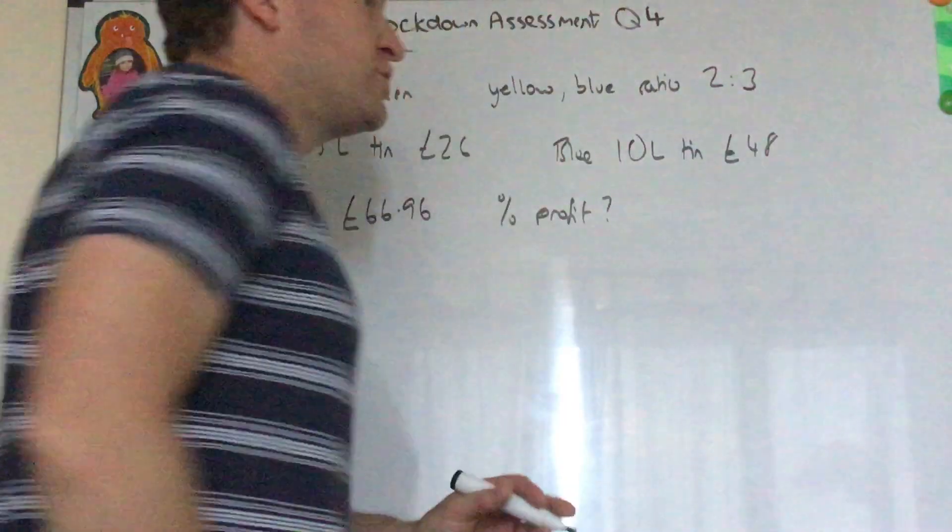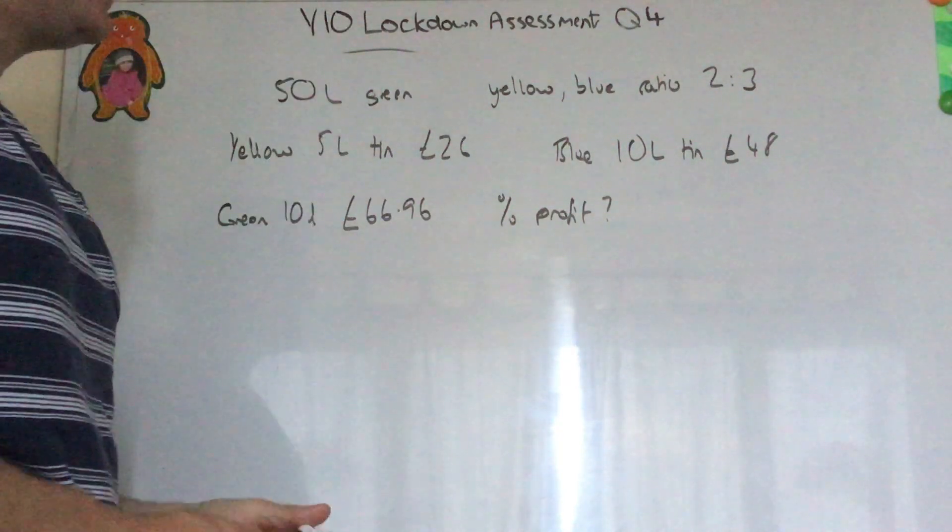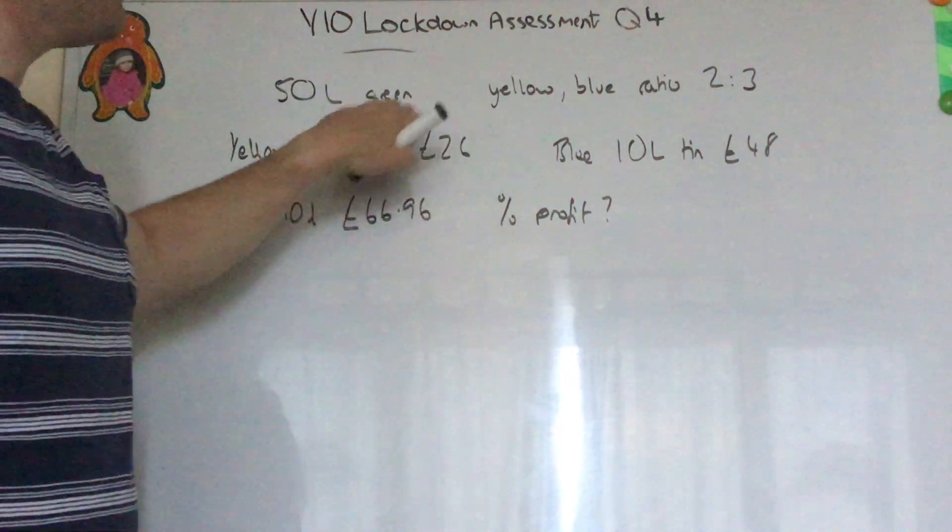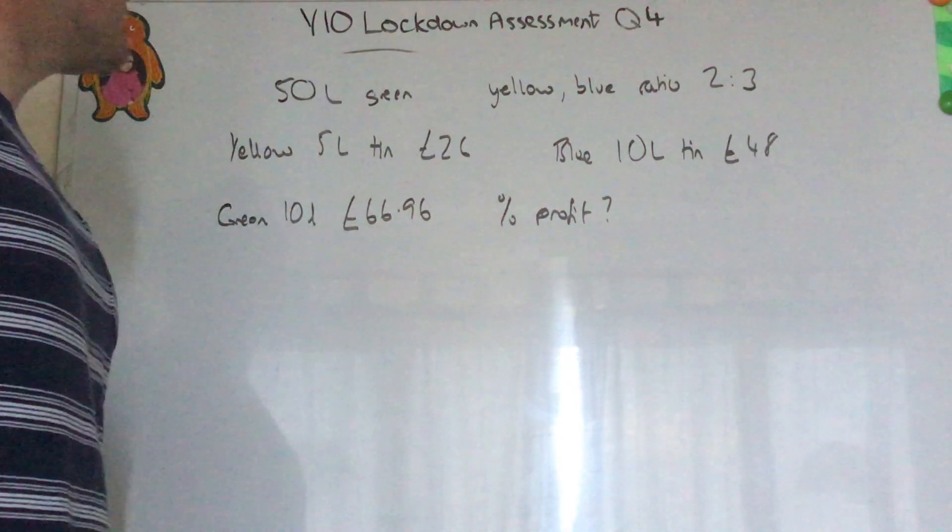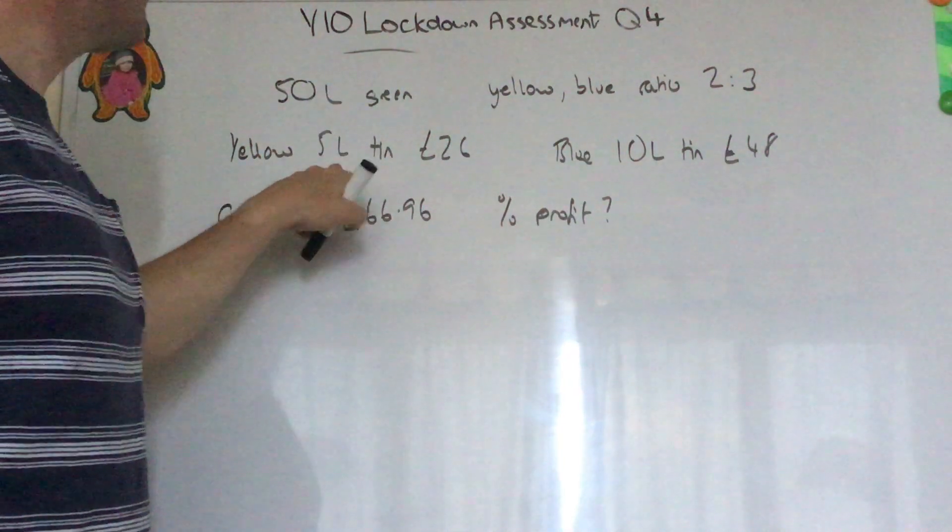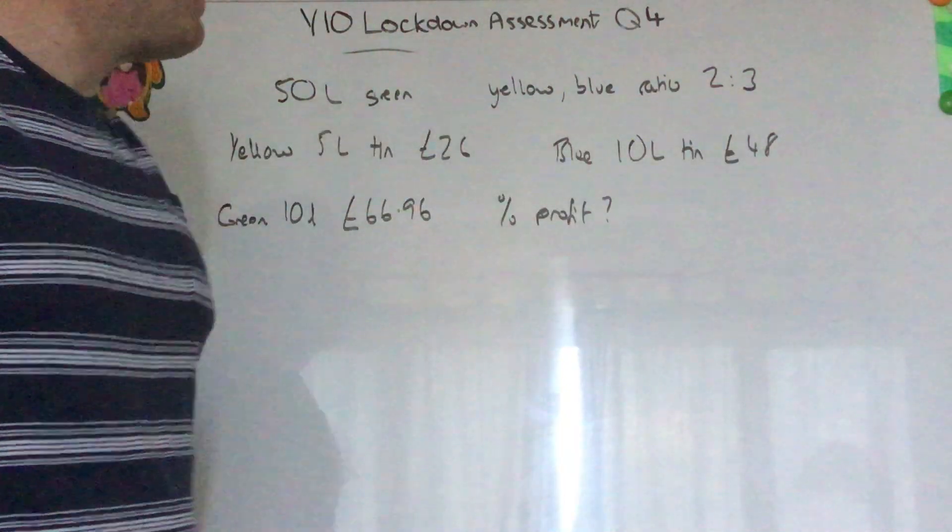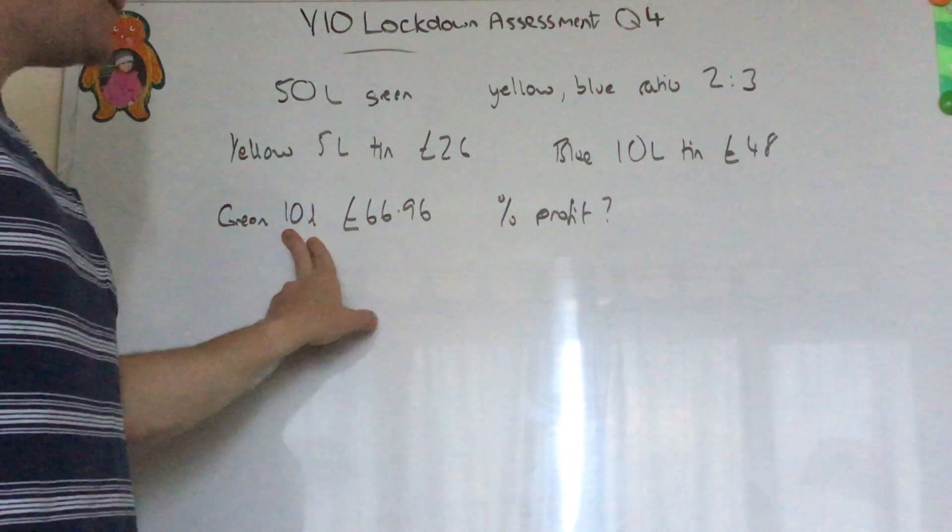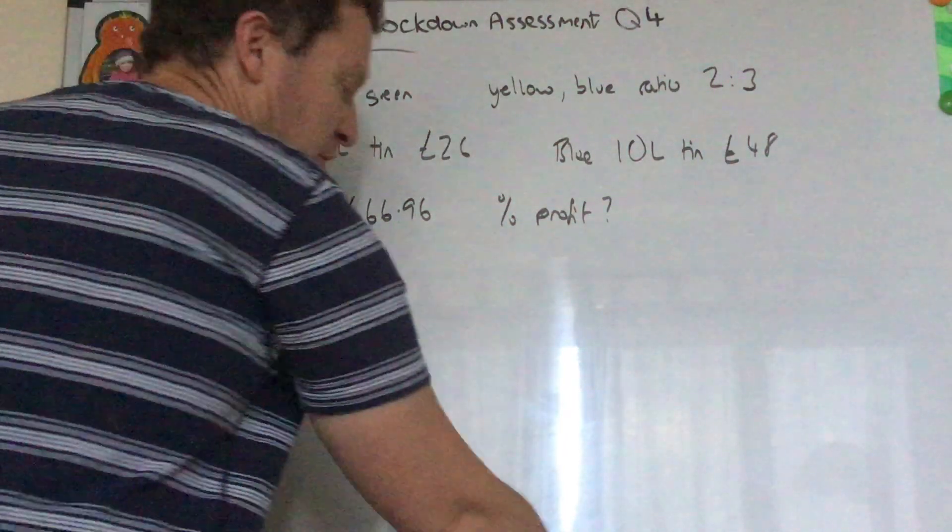Okay question four, ratio question and percentages. So we get told that Robert is mixing paint, he's making green paint from yellow paint and blue paint in the ratio of two to three to make 50 litres of green. He buys yellow in five litre tins for £26.10 and blue in 10 litre tins for £48.10. He sells his green paint in 10 litre tins for £66.96. What's his percentage profit?